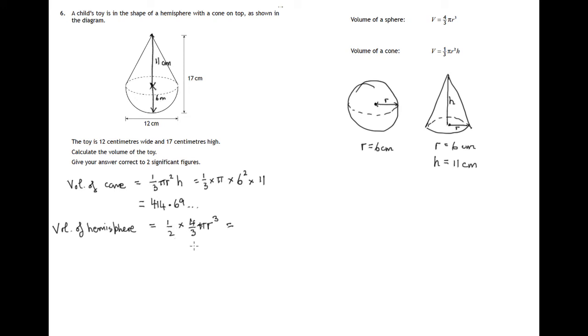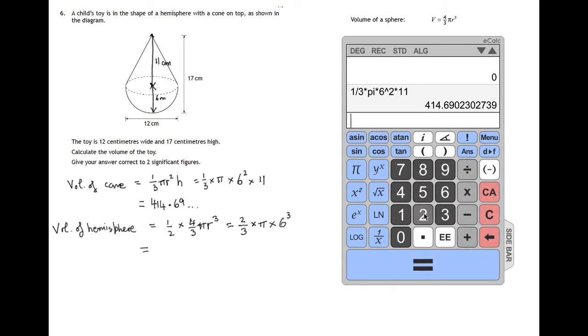Now if we have 4 thirds and we want a half of 4 thirds, we'll end up with only 2 thirds. A half of 4 is 2. So a half of 4 thirds is only 2 thirds. So 2 thirds times the pi times r cubed. And again, r is 6. So that's the calculation we're doing now. So 2 thirds, 2 divided by 3 times pi times 6 raised to the power 3.